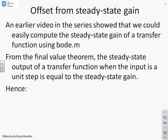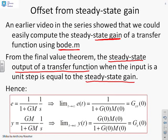So finding the offset from the steady-state gain. An earlier video showed that we could easily compute the steady-state gain of a transfer function using bode.m, and so we're going to use bode again. Now from the final value theorem, the steady-state output of a transfer function when the input is a unit step is equal to the steady-state gain of that transfer function.